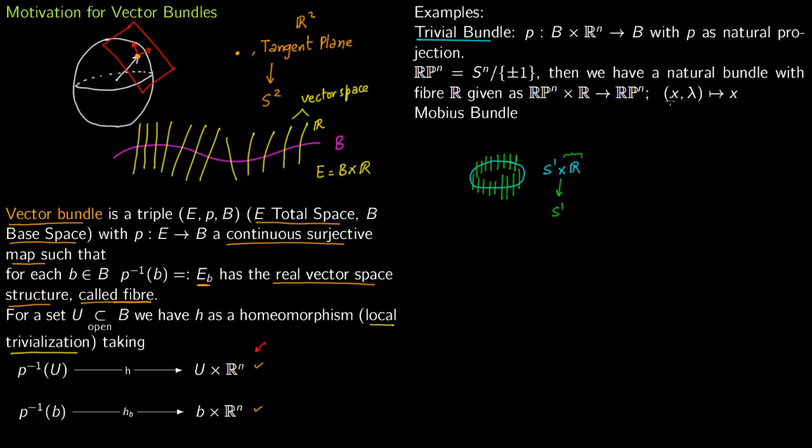So you identify the antipodal points and you have a natural bundle structure. RP^n times R to RP^n. So for RP² (x₀, x₁, x₂) this is same as if you multiply by some constant lambda. So lambda times (x₀, x₁, x₂). So this lambda could be any constant in real numbers. So that is why you take R here. So X comma lambda going to X going to the first factor.